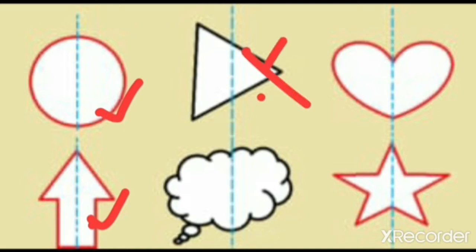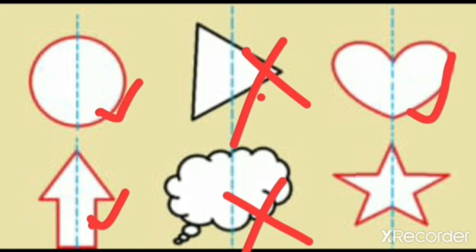What about this arrow? It's a symmetrical object. What about this triangle? No. We cannot divide this triangle or a cloud into two equal parts. And we can divide heart shape and star into two equal parts.